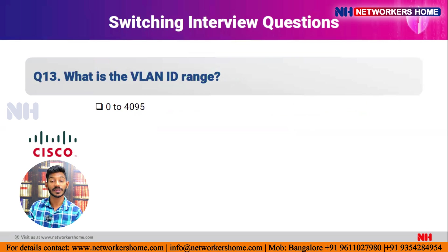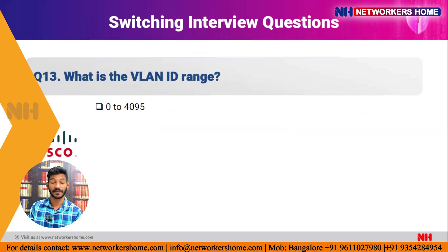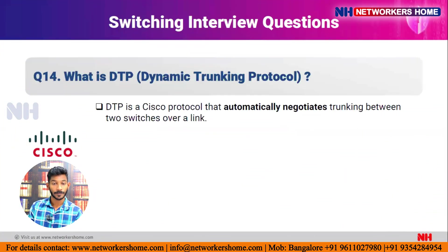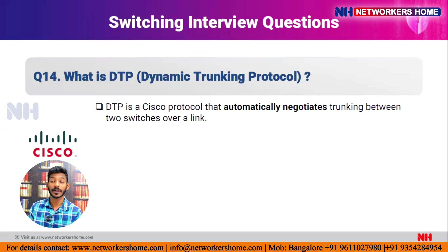Question thirteen: what is the VLAN ID range? The range of VLAN IDs is 0 to 4095. Question fourteen: what is DTP (Dynamic Trunking Protocol)? DTP is a Cisco proprietary protocol that automatically negotiates trunking between two directly connected switches.